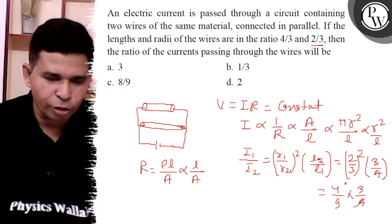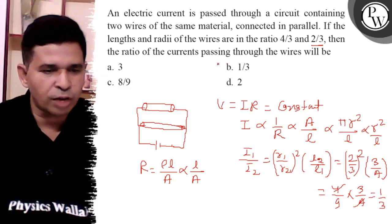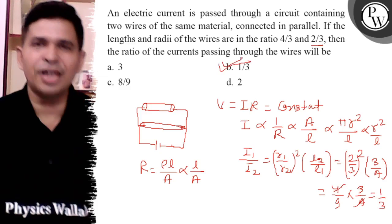4 and 4 cancel out. So it is 1 by 3. The final answer is 1 by 3, option B. Thank you. All the best.